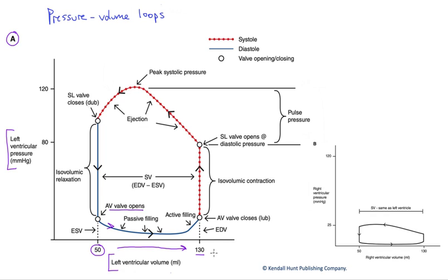Our end diastolic volume is the maximum volume that that ventricle has in this particular cycle. The volume that it's going to start with, pressurize and then eject a portion of.